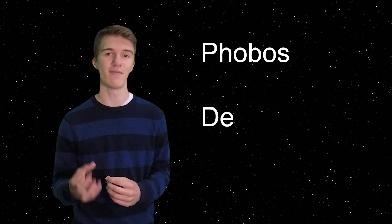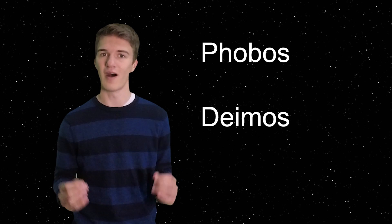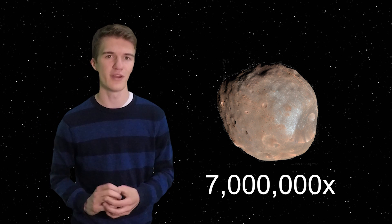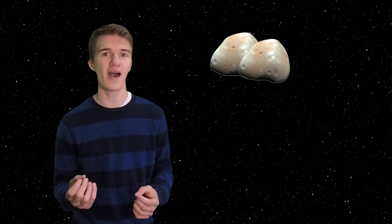The two moons around Mars are called Phobos and Deimos, both of which are a lot smaller than our moon around Earth. To be exact, Phobos is seven million times smaller than our moon, and Deimos is five times smaller than Phobos, making them both minuscule in respect to how big our moon is.